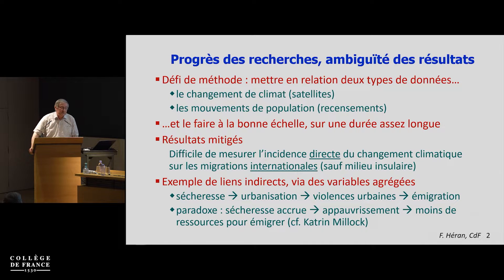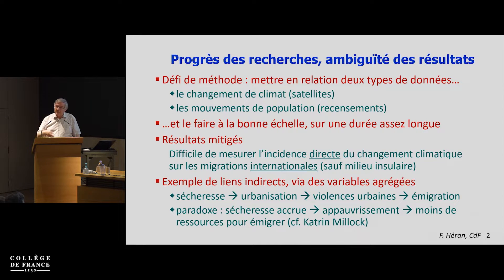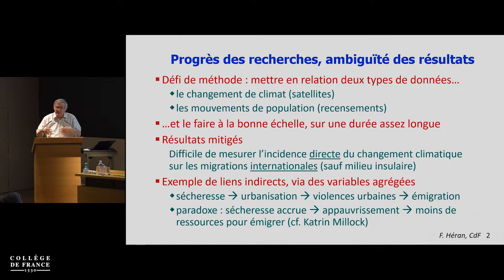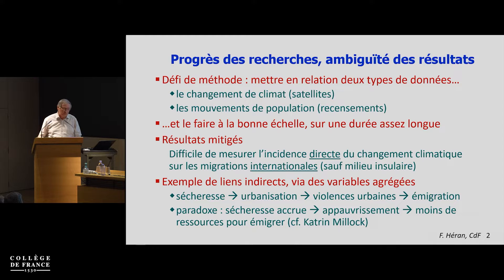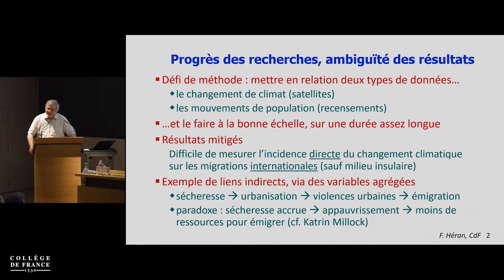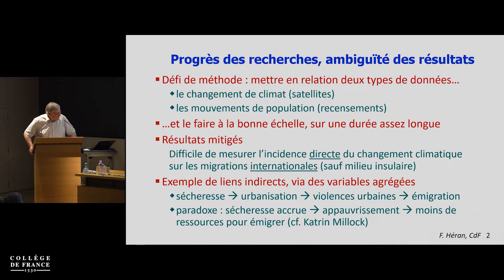What we have is evidence about indirect links through aggregated variables, through collective factors. For example, if the drought worsens, there is more urbanization, there is a positive correlation between urbanization and the rise of urban violence. And we know from other studies that urban violence is one of the triggers of international immigration. This kind of indirect connection is not strictly convincing.